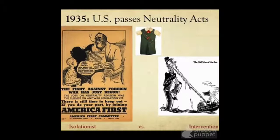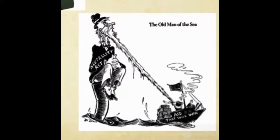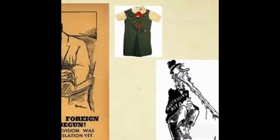On the other hand, interventionists argued that the US needed to get involved in foreign affairs. In this cartoon, Dr. Seuss shows that the Neutrality Acts would hold up aid that could help turn the tide of war — so you can see his position. On another note, there were so many Americans against possibly going to war that the Girl Scouts changed the color of their uniform because it was considered too military-like.